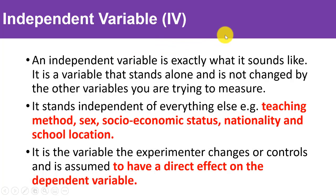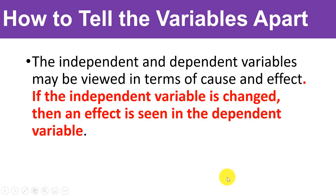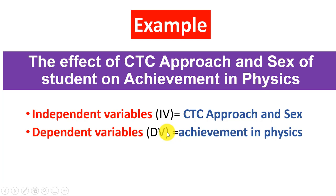Scores on achievement tests, attitude scores, and scores on practical skills are variables dependent on the independent variable — that's why they're called dependent variables (DV). The independent variable (IV) stands alone and is not changed by the other variables you are trying to measure. The experimenter changes or controls the IV, and it is assumed to have a direct effect on the dependent variable.